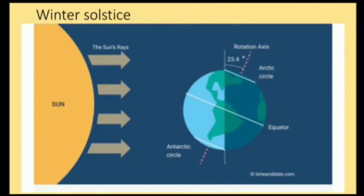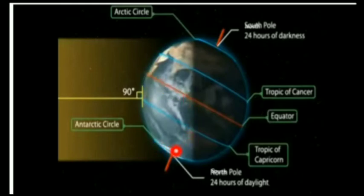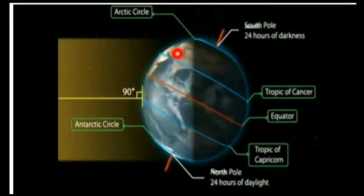During winter solstice, the South Pole is tilted towards the Sun and the North Pole is away from the Sun. The sun rays fall directly over the Tropic of Capricorn. The southern hemisphere, all the way to the South Pole, receives maximum sunlight with 24 hours of daylight. Meanwhile, the North Pole is away from the Sun and experiences 24 hours of darkness. So vice versa: in the northern hemisphere it is winter solstice and in the southern hemisphere it is summer solstice.